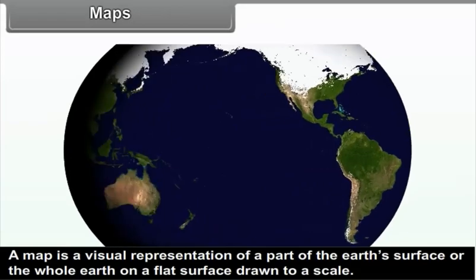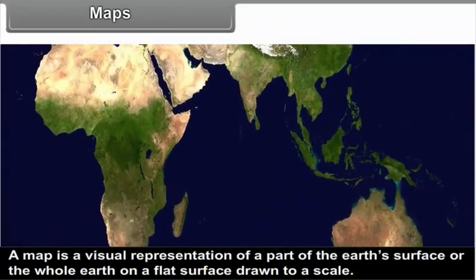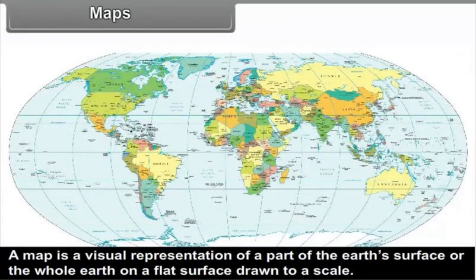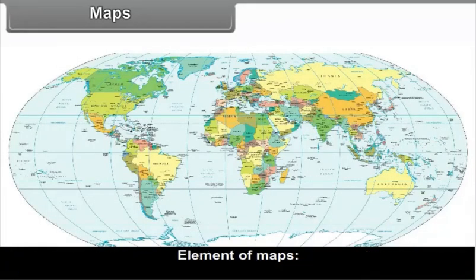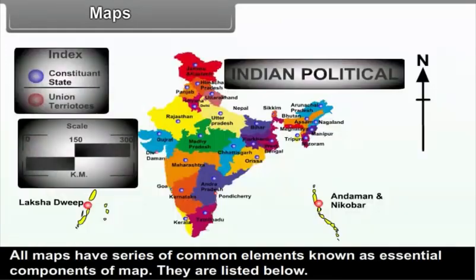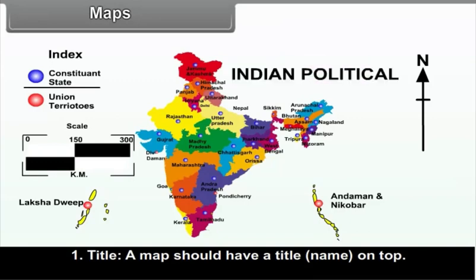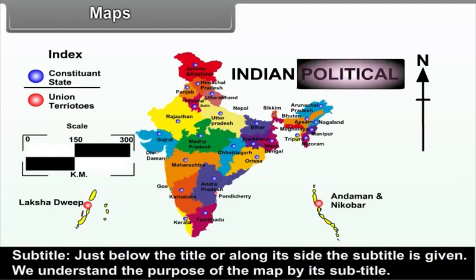9.2 Maps: A map is a visual representation of a part of the earth's surface or the whole earth on a flat surface drawn to a scale. All maps have a series of common elements known as essential components. These include a Title — the name on top of the map — and a Subtitle, given just below or alongside the title, which tells us the purpose of the map.